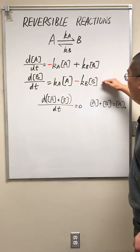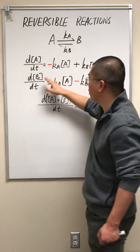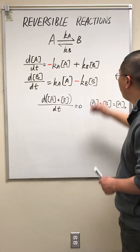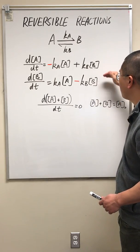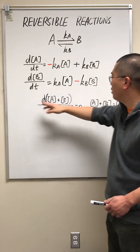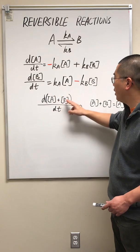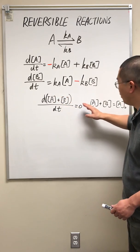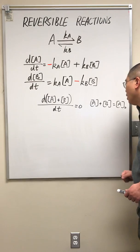Similarly, we have the expression for dB/dt. If we sum up these two equations, we find that the sum of A and B never changes with time.